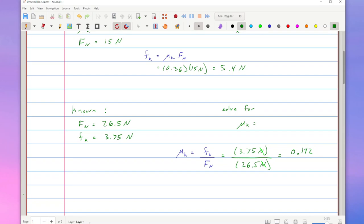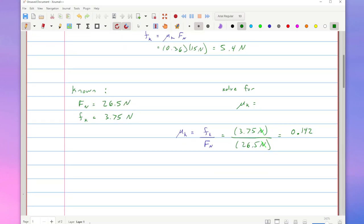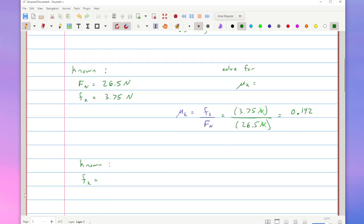One last example showing another algebra rearrangement for this one. Let's take a look at what if my knowns are I've got a particular value for the friction and I know my kinetic friction coefficient and I'm solving for my normal force. So this would be the next set of algebra.